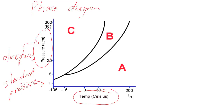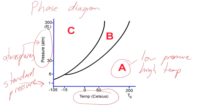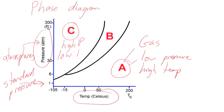Looking at point A on the diagram — it has lower pressure and higher temperature. The state of matter at the highest temperature and lowest pressure is a gas. Point C has high pressure, meaning molecules are forced very close together, and relatively low temperature, meaning molecules are moving very slowly. That state of matter is a solid.